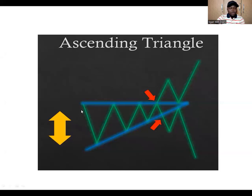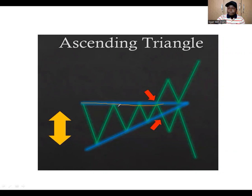Although the ascending triangle is typically seen in an uptrend, it can act as a neutral triangle because the trend can either break to the upside or break to the downside. The difference between this triangle and the rising wedge is that at the top of the triangle, the higher highs are on equal level — but in a rising wedge, they are not on equal level. That is the only difference.